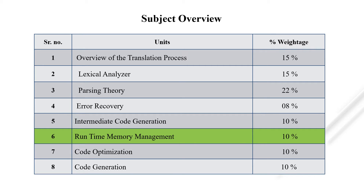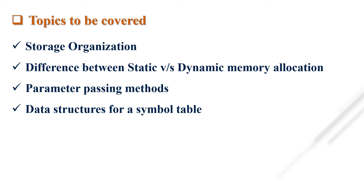We have already completed units 1, 2, 3, 4, and 5. Now we proceed with Unit 6, that is Runtime Memory Management. The topics covered in these videos are storage organization, difference between static and dynamic memory allocation, parameter passing methods, and data structure for symbol table.